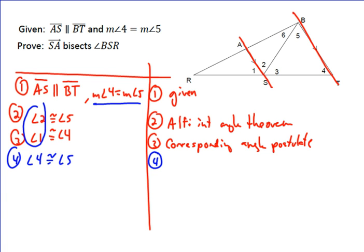I know angle four is congruent to angle five by the definition of congruent angles. And so now, using what we got from the parallel lines and what we got from our measure of angle four equal measure of angle five, we can now start using the transitive property.